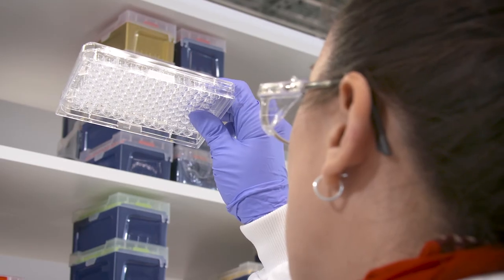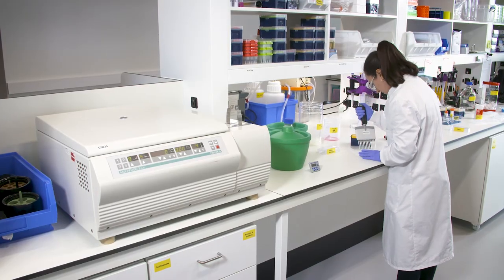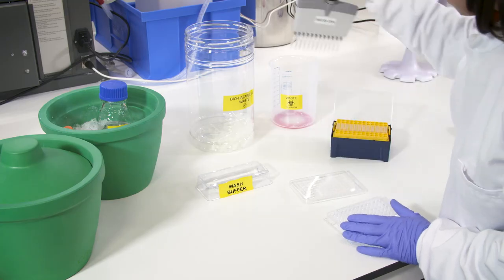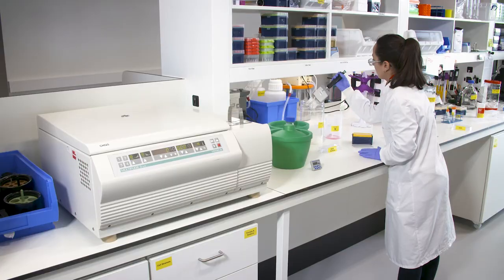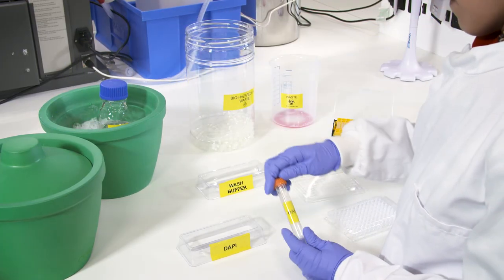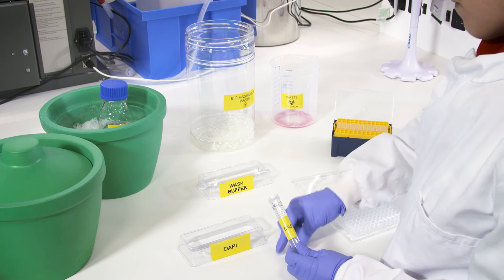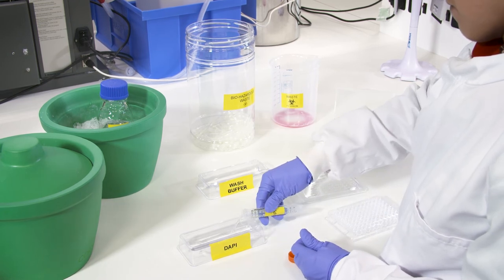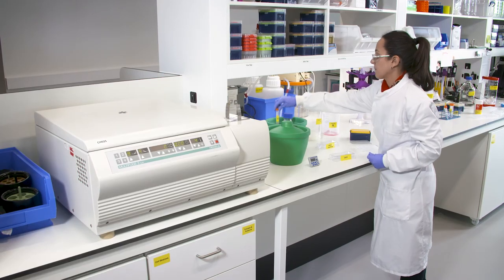As before, ensure the pellet is visible in the plate before discarding the supernatant. Check for live, dead cells by staining with DAPI or other viability dyes for 5 minutes at 4 degrees Celsius in the dark before analysis at the flow cytometer.